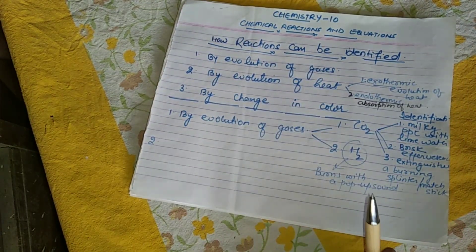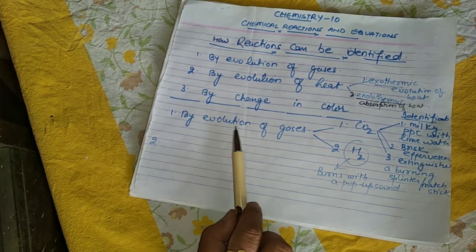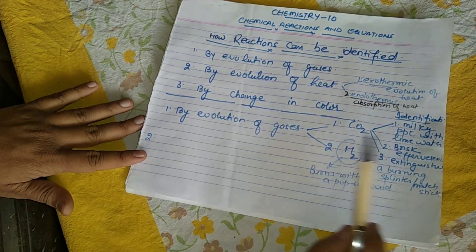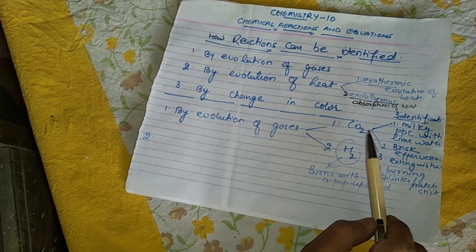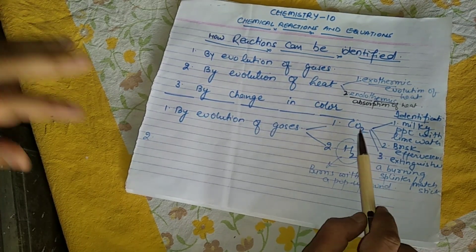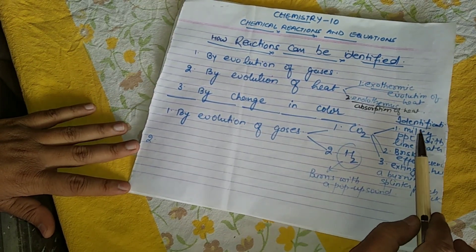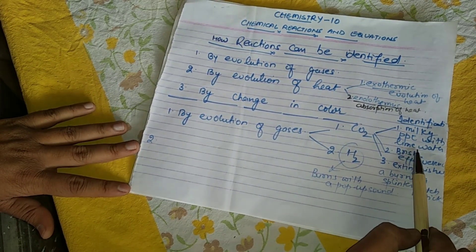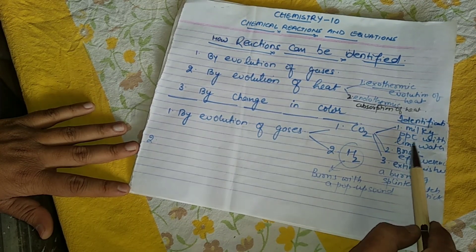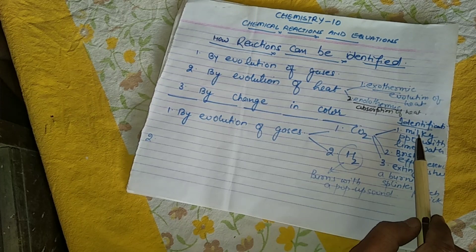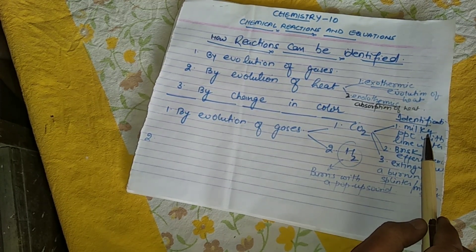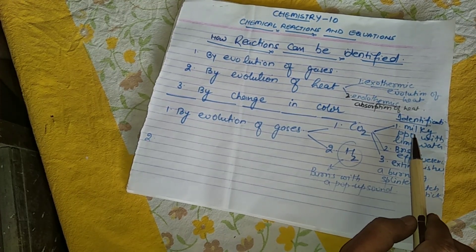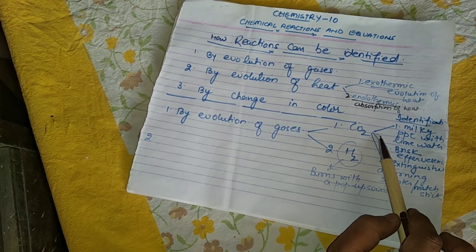Now we will learn one by one how these tests are done. First, by evolution of gas. At your level, there are only two gases: carbon dioxide and hydrogen. Carbon dioxide is identified because it will turn lime water milky in color. Lime water is a solution of calcium hydroxide — it has a transparent look, but as soon as carbon dioxide is passed through it, it turns milky due to the formation of insoluble calcium carbonate.